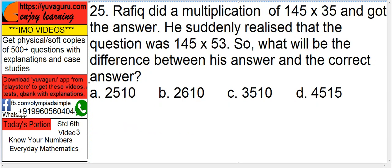Rafiq did a multiplication of 145 into 35 and got the answer. He suddenly realized that the question was 145 into 53. So what will be the difference between his answer and the correct answer?